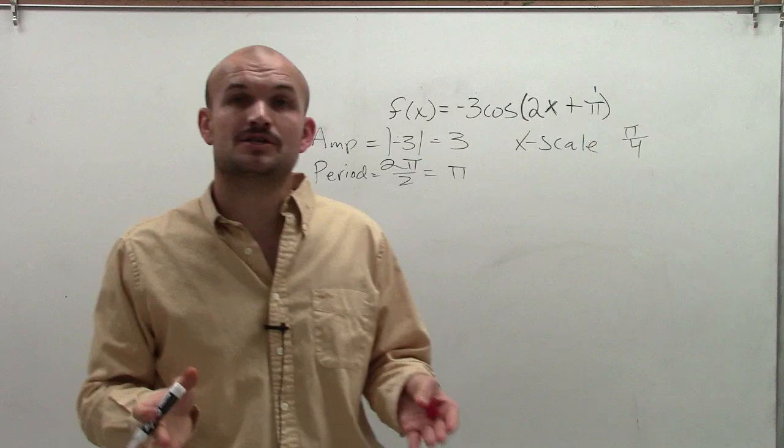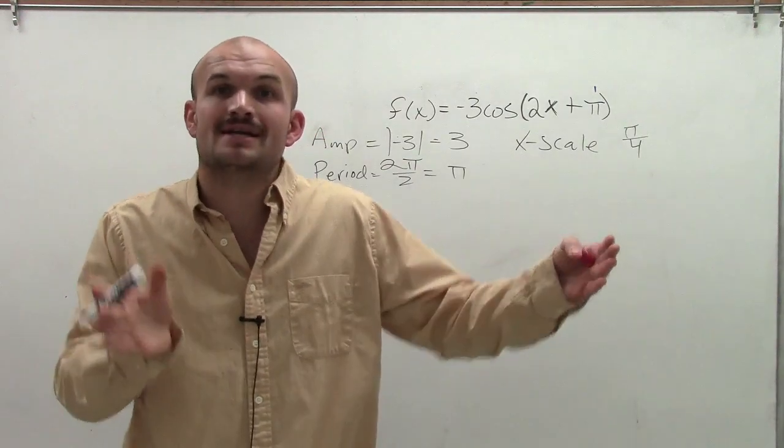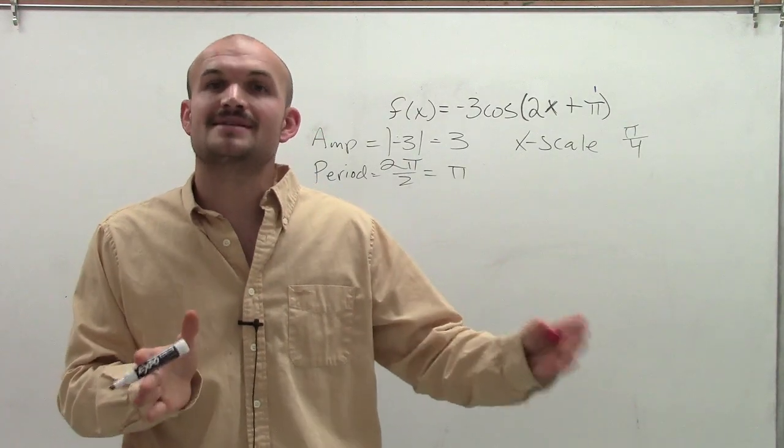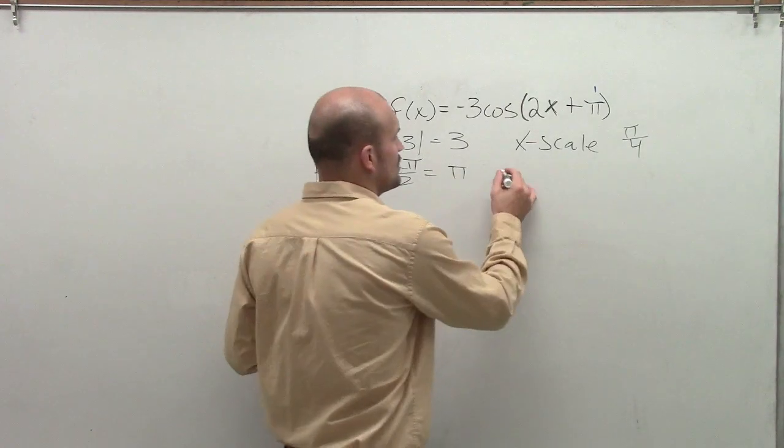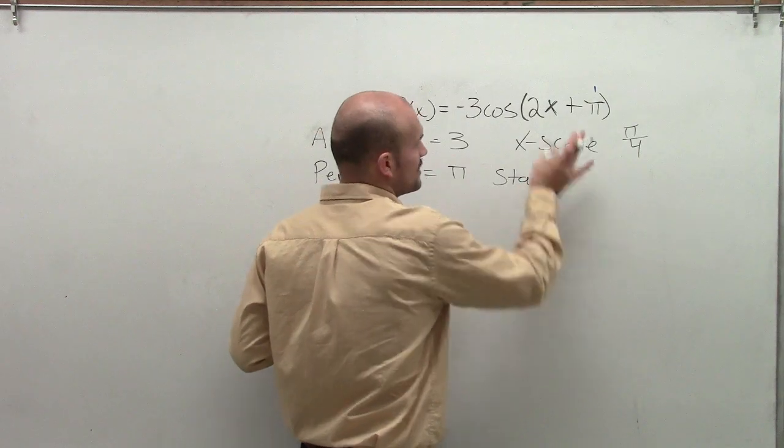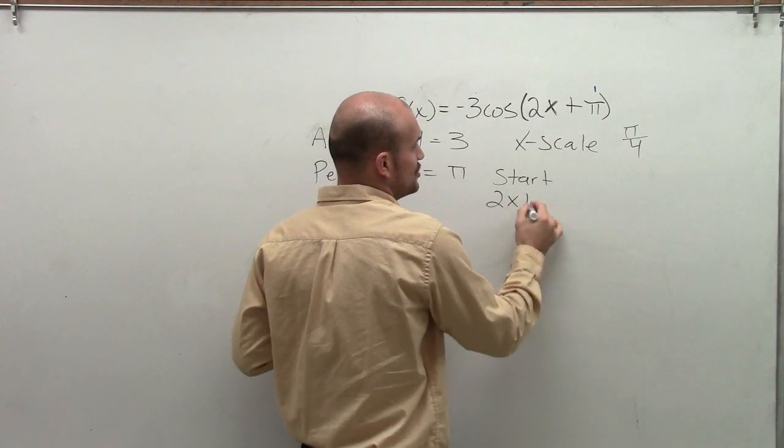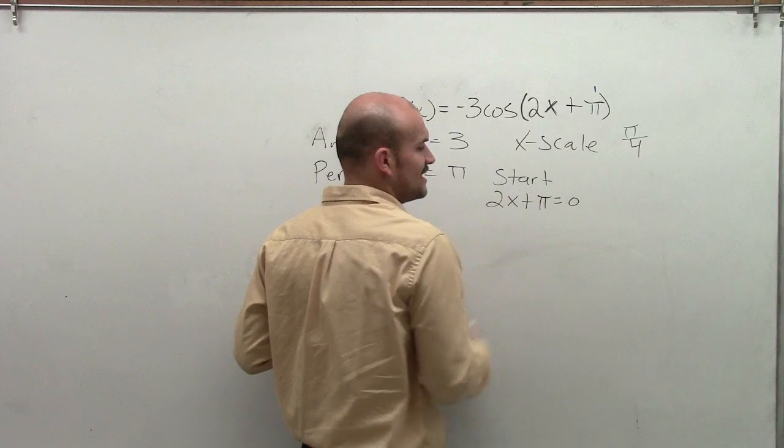The next thing we want to do is determine where is the starting end of our initial period that we're going to graph. Because after that, remember, we can continue our graph infinitely in the positive and the negative direction. So our starting point, what we're going to do is take what's inside of our function, which is 2x + π, and we're going to set that equal to 0.